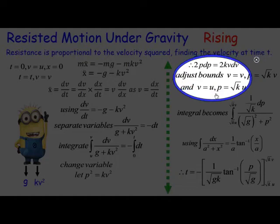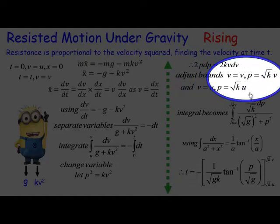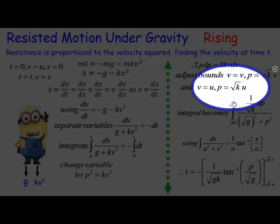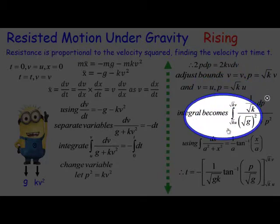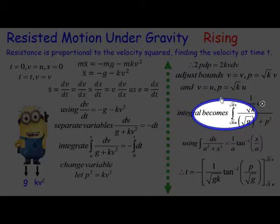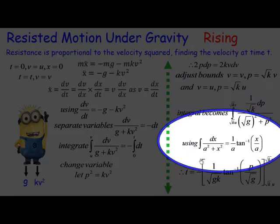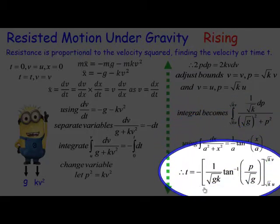We adjust the bounds. Obviously the bounds will need to be now p bounds instead of v bounds, and p is equal to root kv and root ku. So here's the integral, and you can see the bounds have changed. It's an inverse tan one and basically it turns into t equals minus one on root gk inverse tan p over root g, from root kv to root ku, which we're going to need to evaluate.